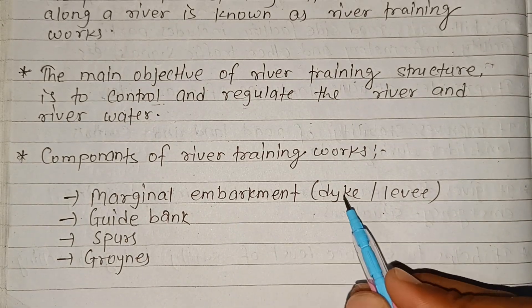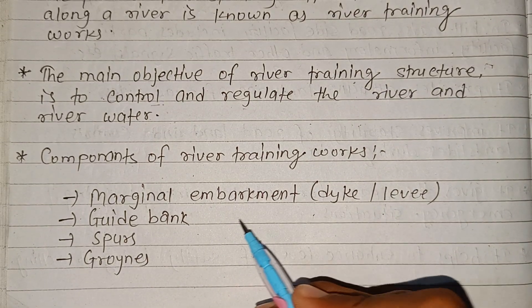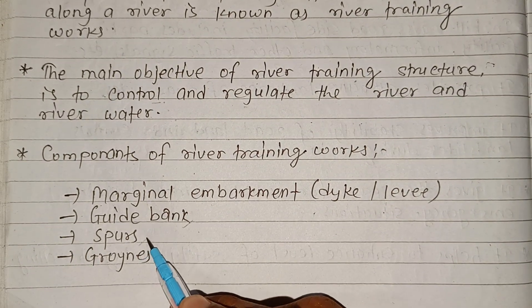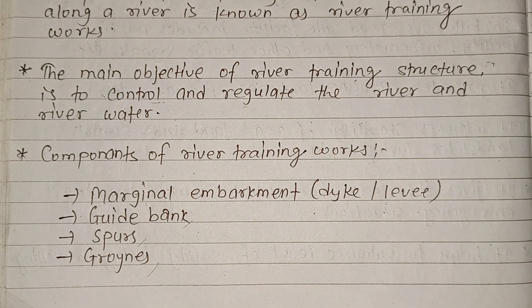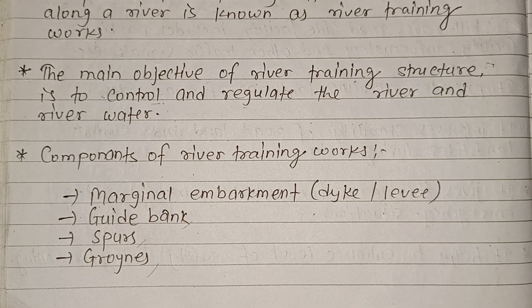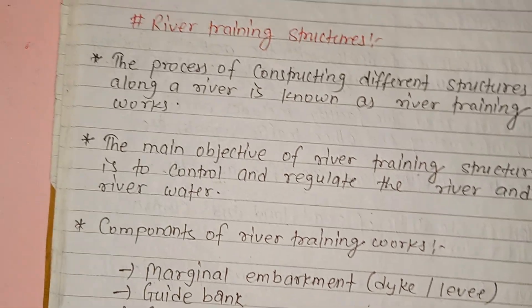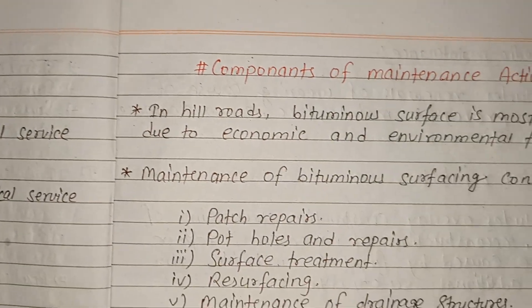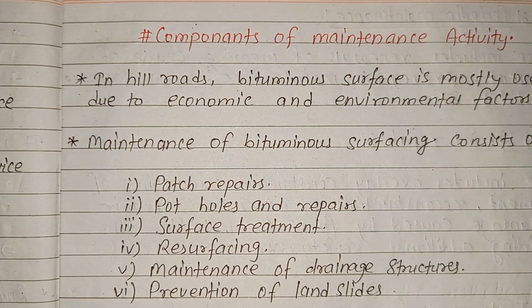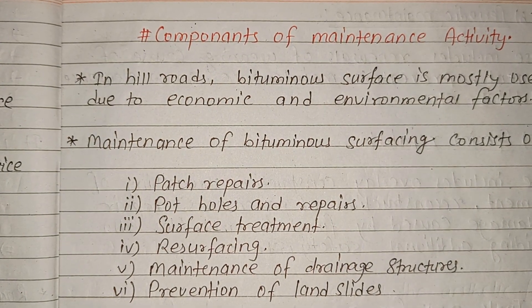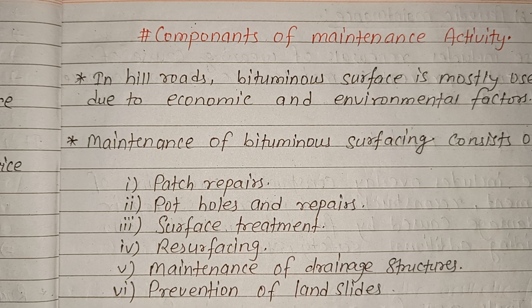Components of river training include marginal embankments and guide structures. Maintenance activity components in hill road: bituminous surface is mostly used due to economical and environmental factors.